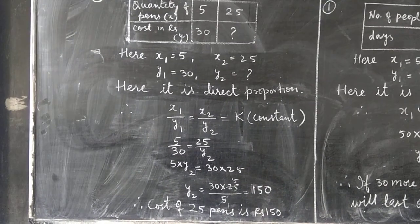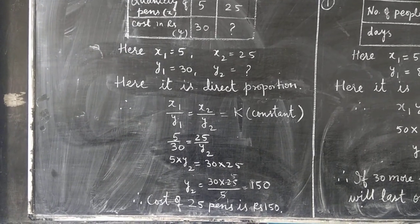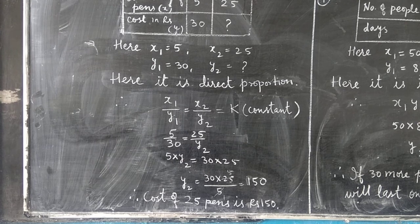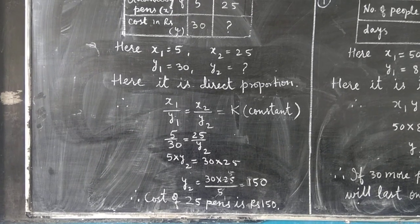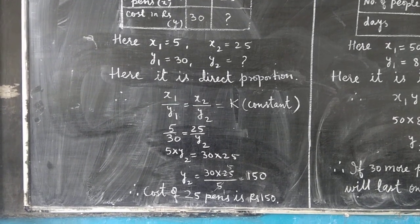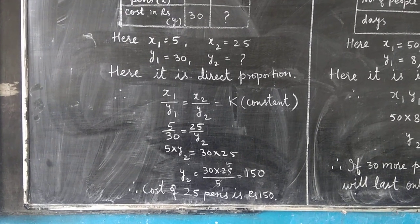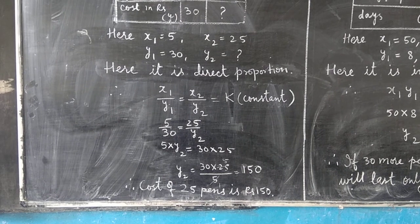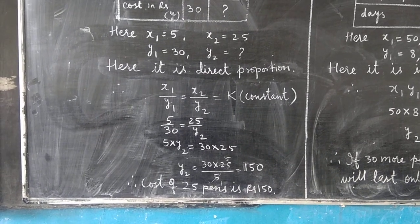Putting in the values: 5/30 = 25/y2, so 5 × y2 = 25 × 30, giving y2 = (30 × 25)/5. Cancelling, we get y2 = 150. Therefore the cost of 25 pens is rupees 150.